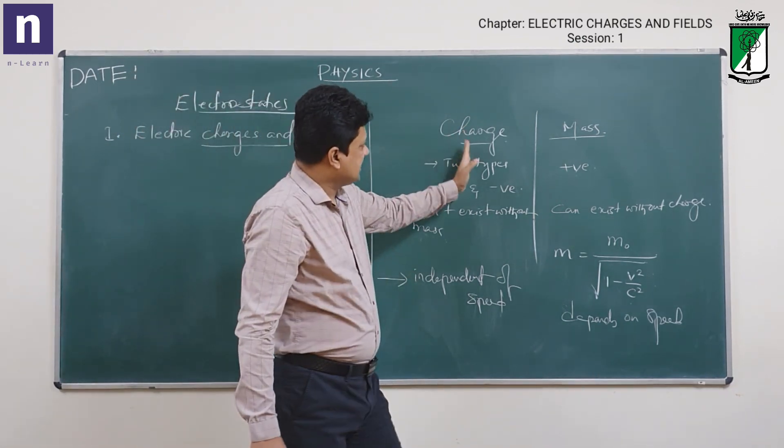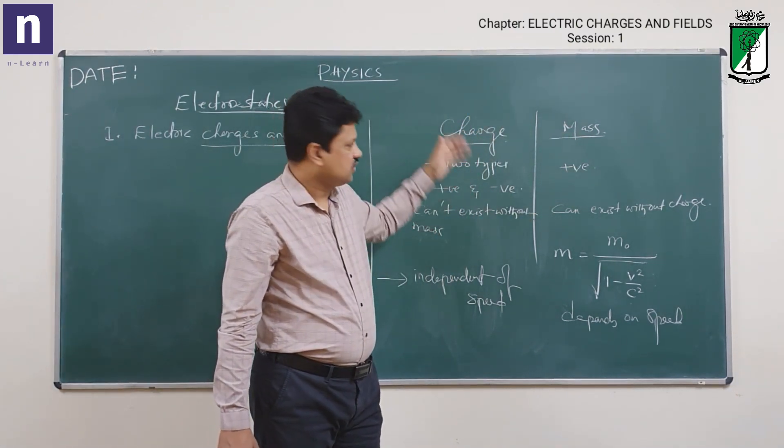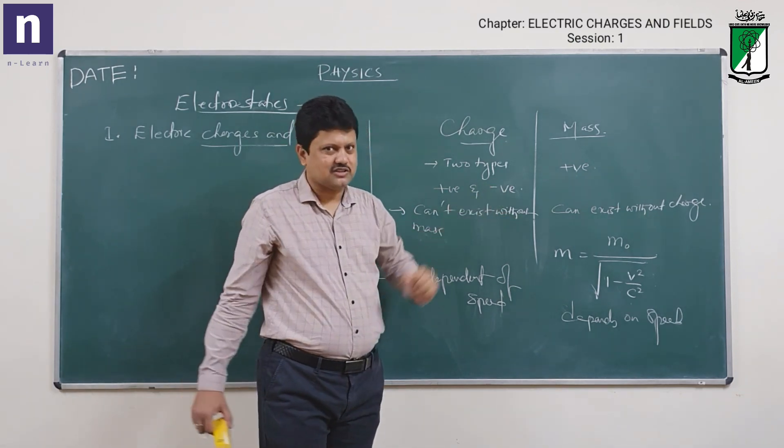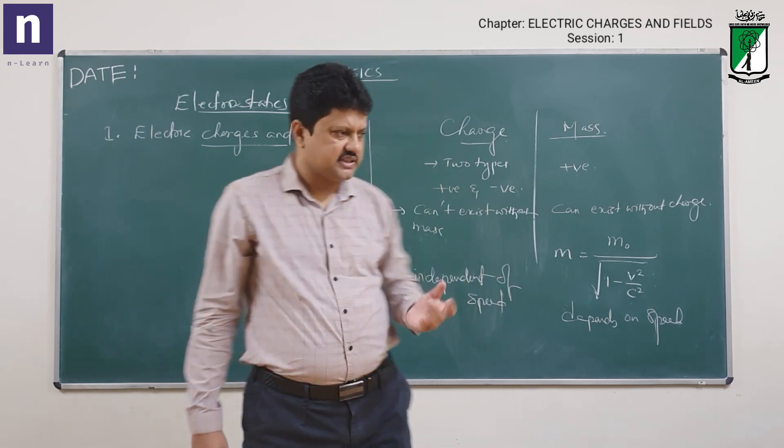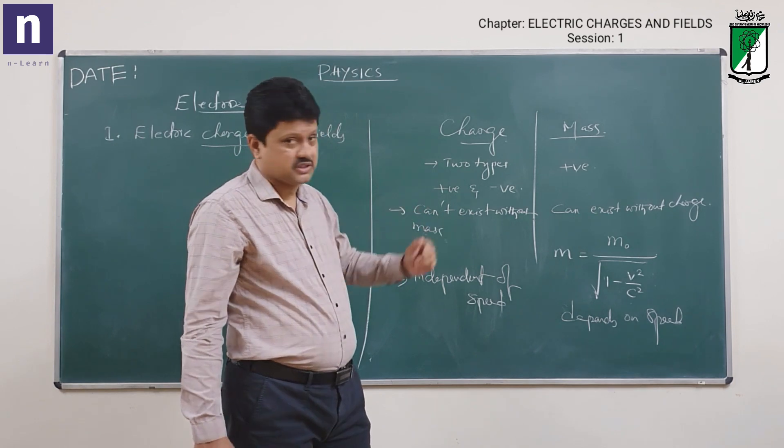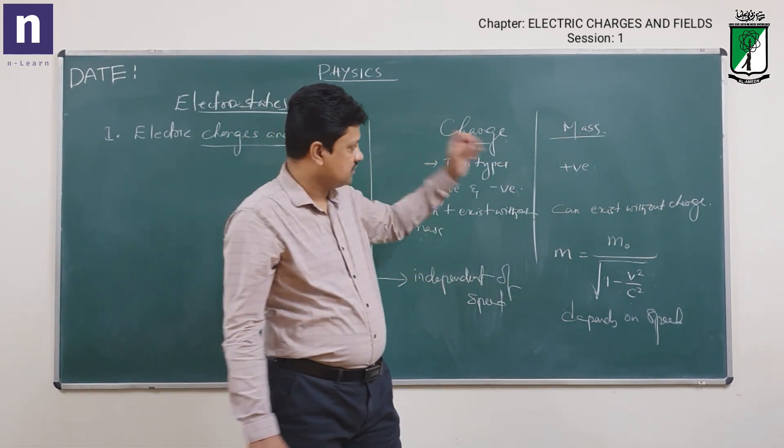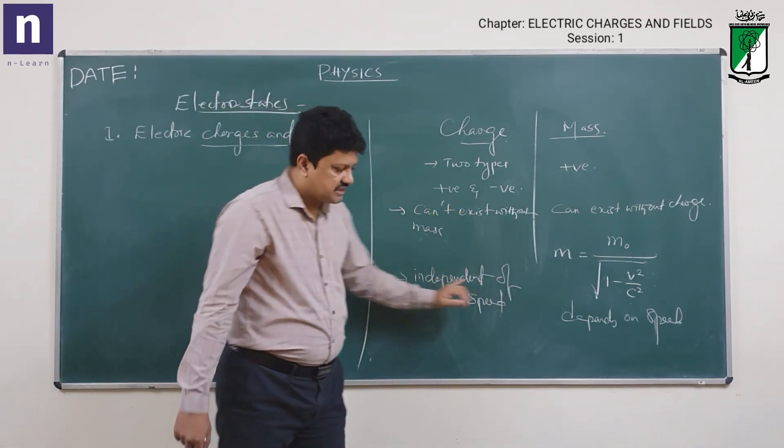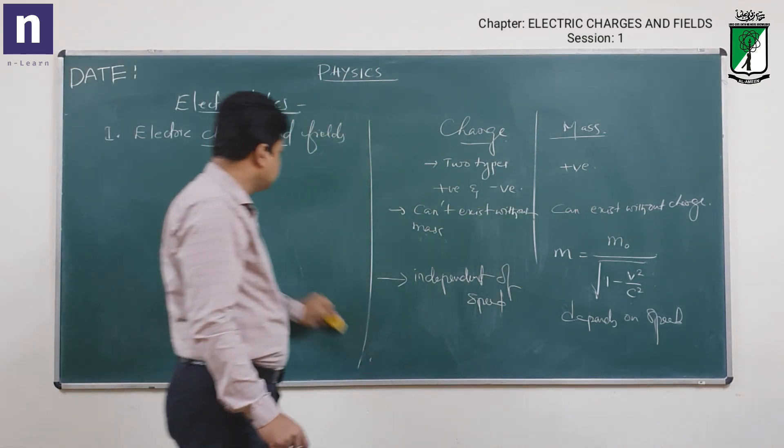So remember, charge cannot exist without mass, but mass can exist without charge. Charge is of two types, positive and negative, like electron and proton. Electron is negative and proton is positively charged. Whereas mass, there is no kind of negative mass, only positive mass. Charge is independent of speed, and mass depends on speed. These are the important differences between charge and mass.